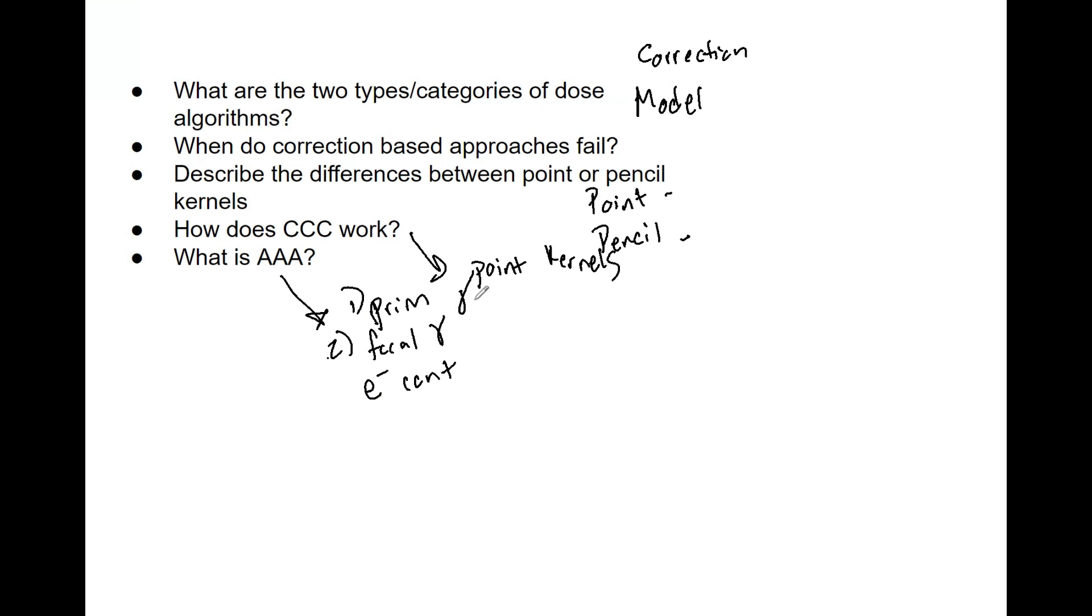And then finally we have our electron contamination, which is from electrons that are made from interactions within the head or any of the beam modifiers.